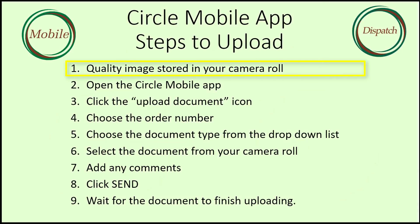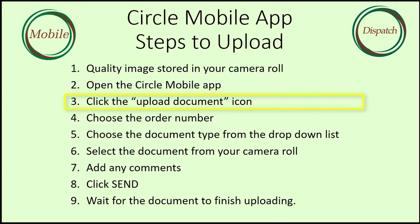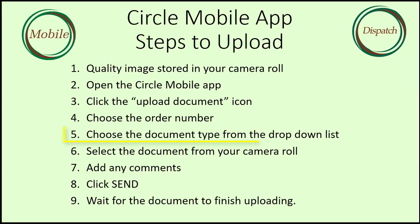First, get a good quality image of the document you want to send and store it in your camera roll. Second, open the Circle Mobile app. Third, click on the upload document icon. Fourth, if you are in a manifest with more than one order, choose the order number. Fifth, choose the document type from the drop-down list.